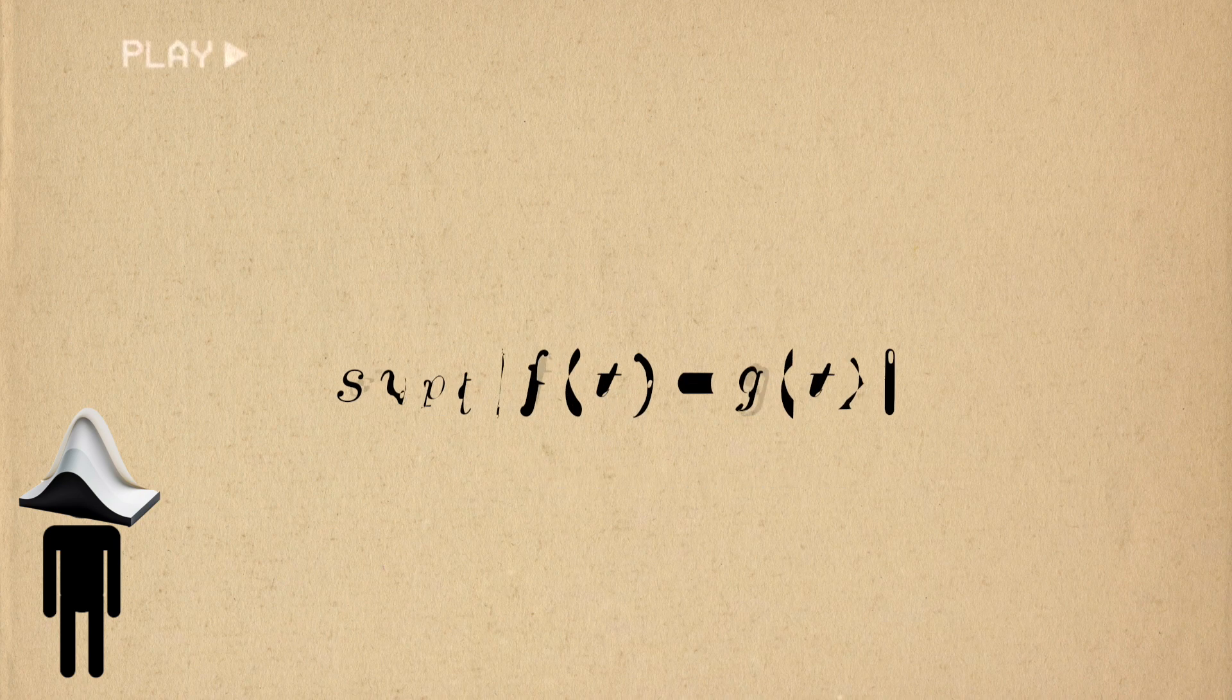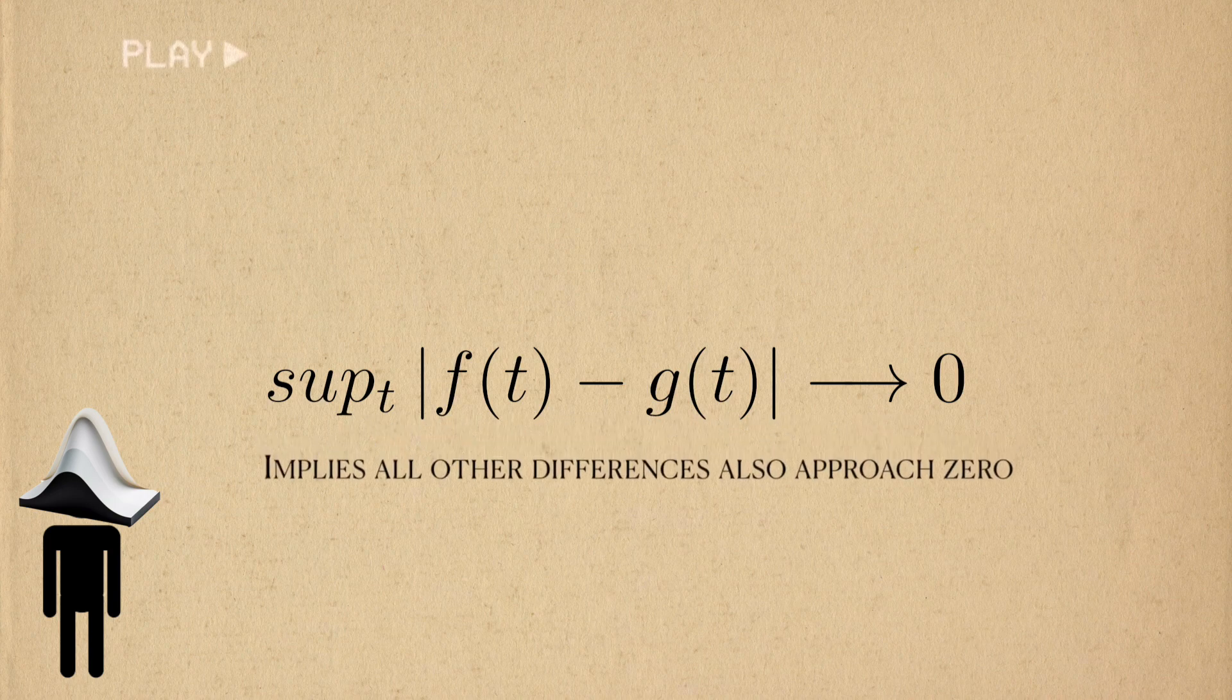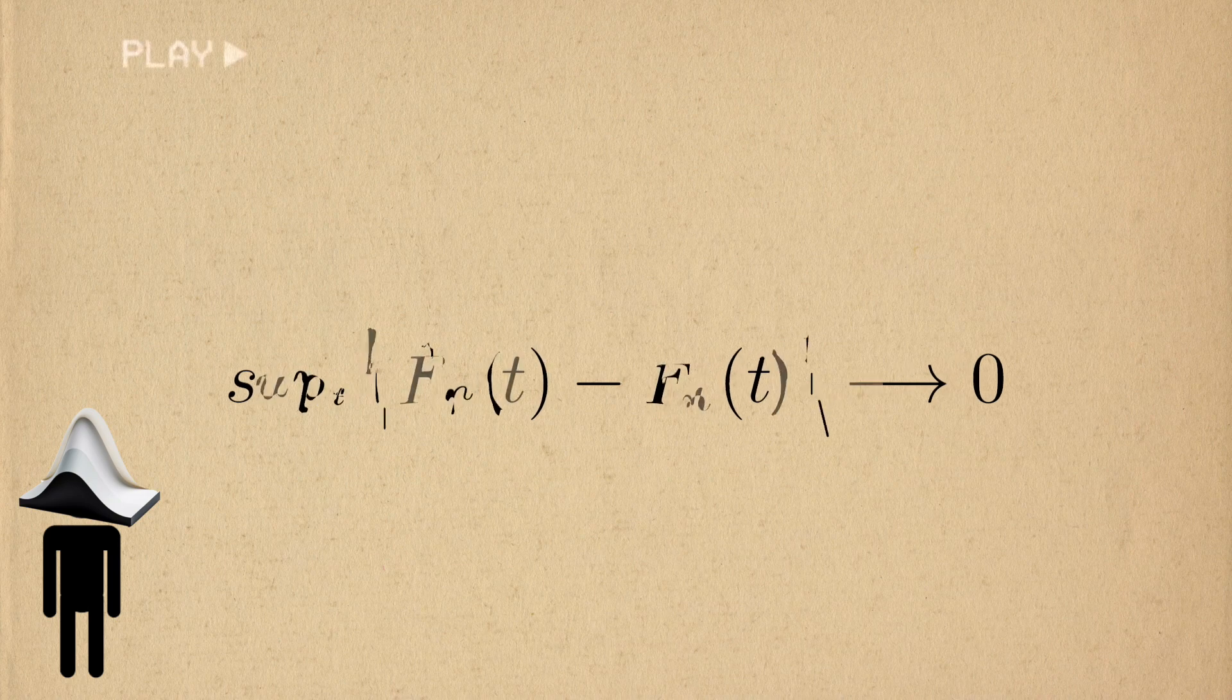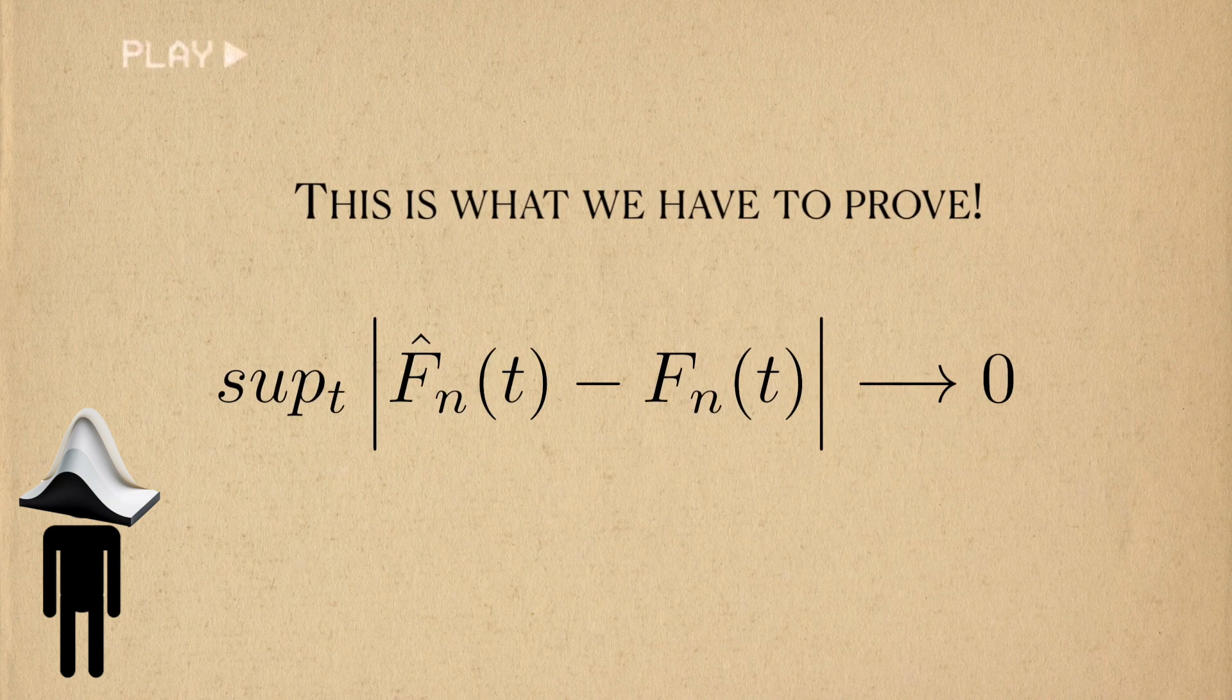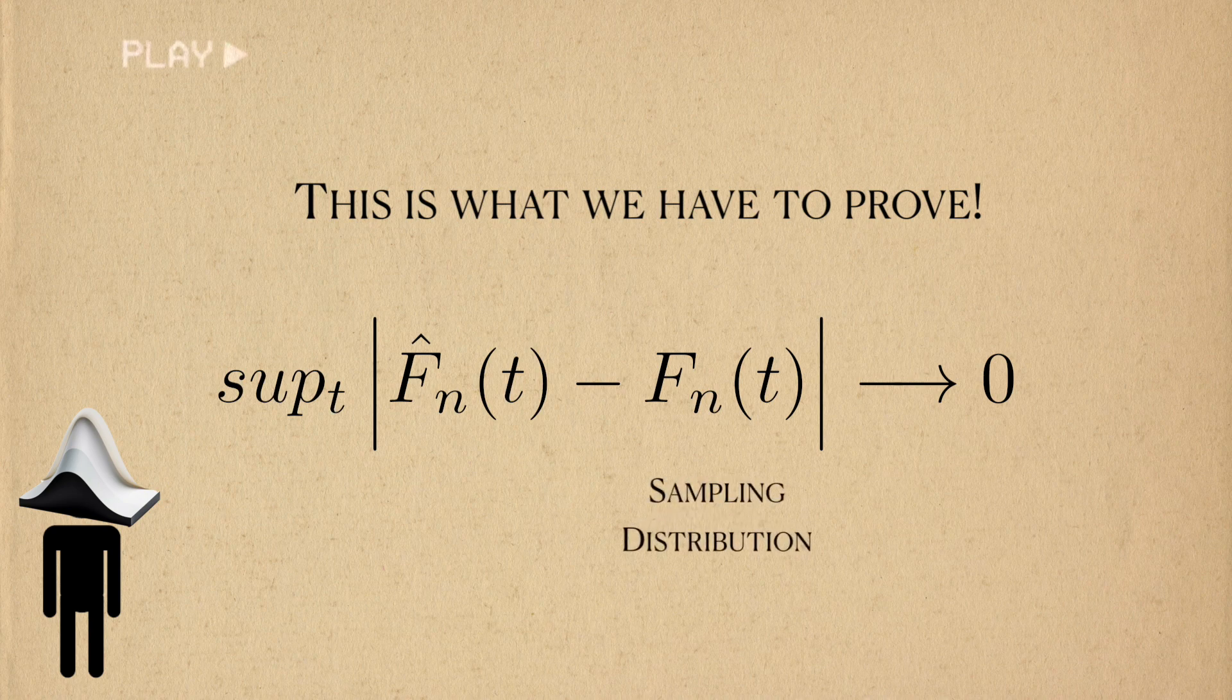If this widest difference were to go to zero, then it follows that the two functions are close, or essentially the same. In other words, to prove that the bootstrap works, we need to demonstrate that the uniform norm between the sampling distribution and the bootstrap distribution either is zero or will go to zero upon some condition. This is called uniform convergence.